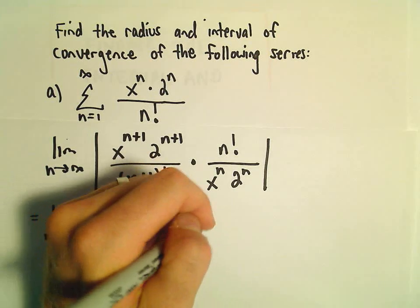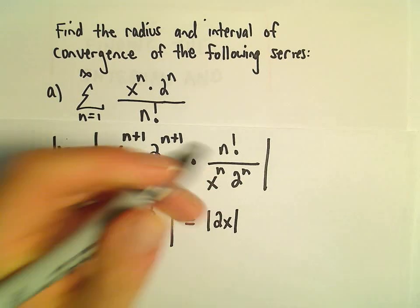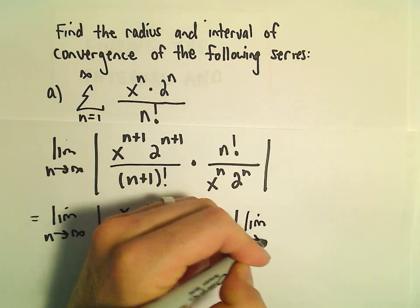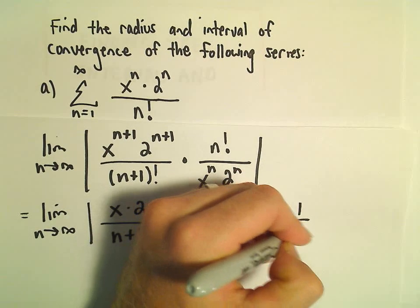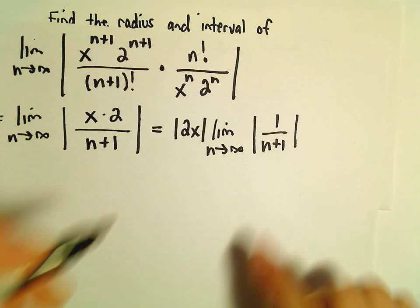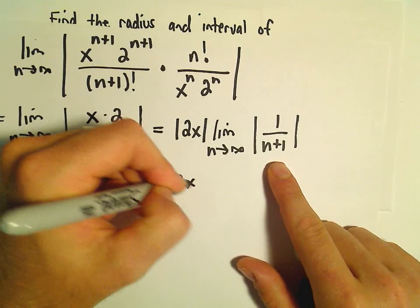You could pull the 2x out and keep that in absolute value, and then we have the limit as n goes to infinity of 1 over n plus 1. But this limit is simply going to equal 0.